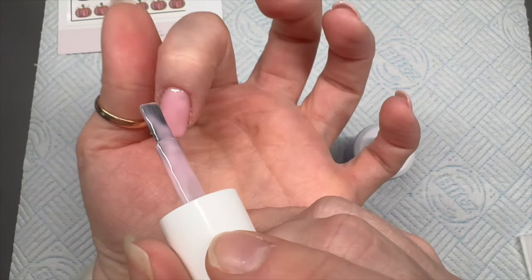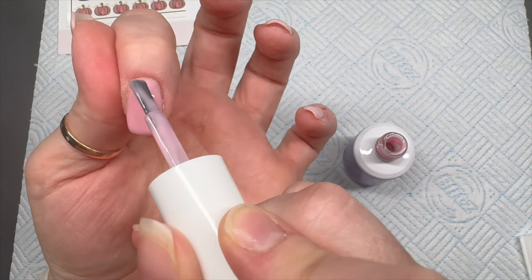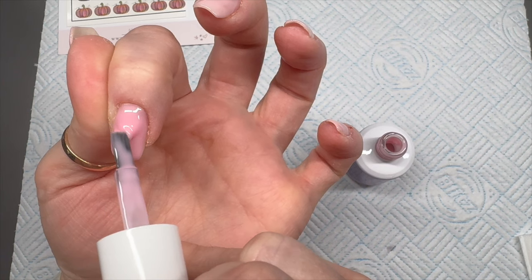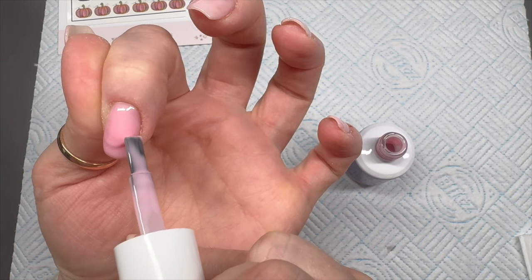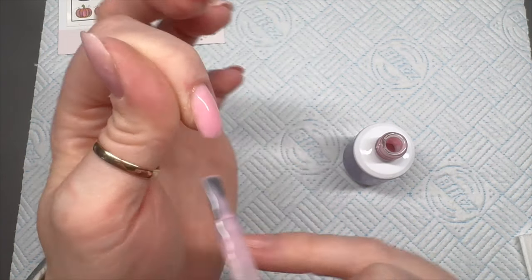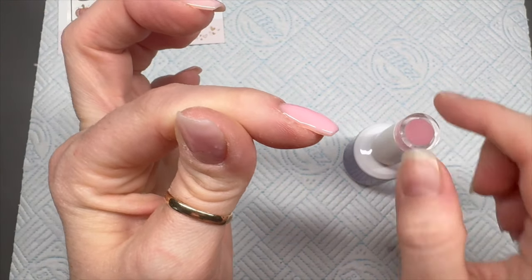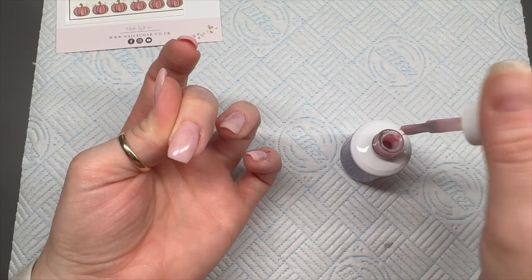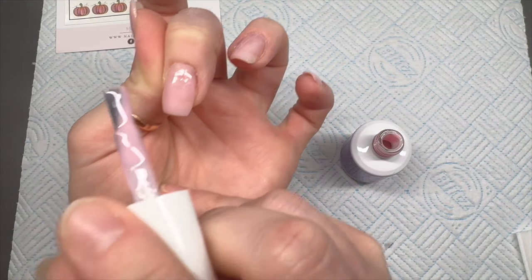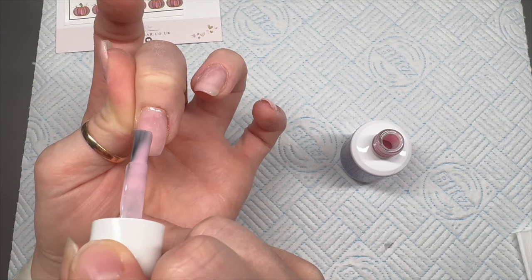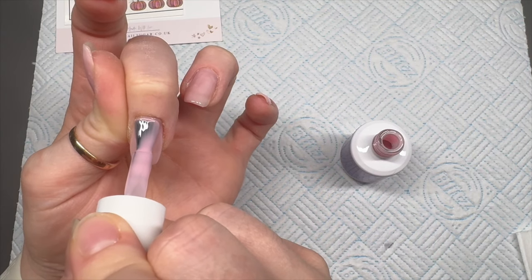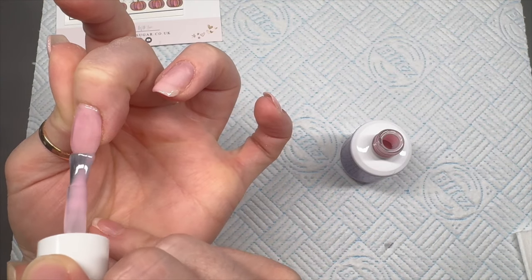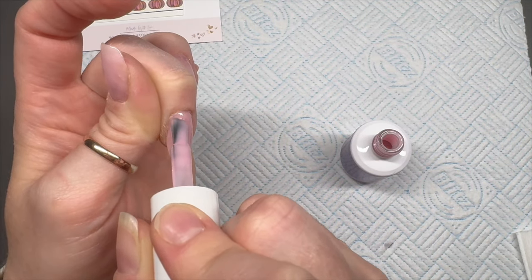Now I'm using the gel to create a little bit of strength on my natural nails. Do be careful as well sometimes because if you add a lot on, it can cause a heat spike. Funnily enough this time around I didn't get much of a heat spike on these. Sometimes I get quite a bad heat spike and sometimes I don't. This time I didn't for some reason.